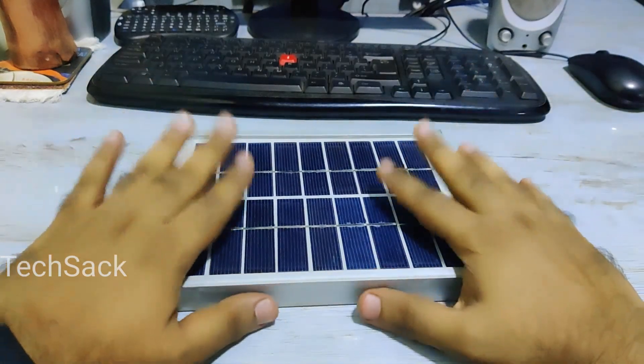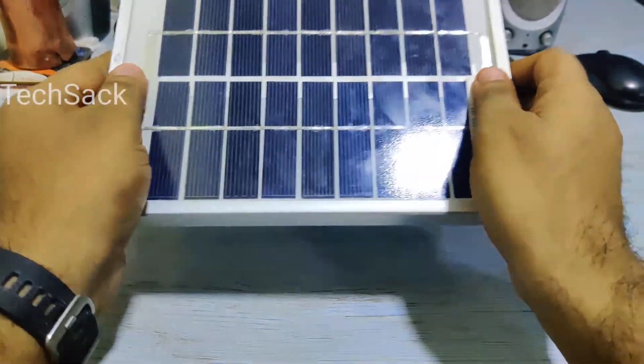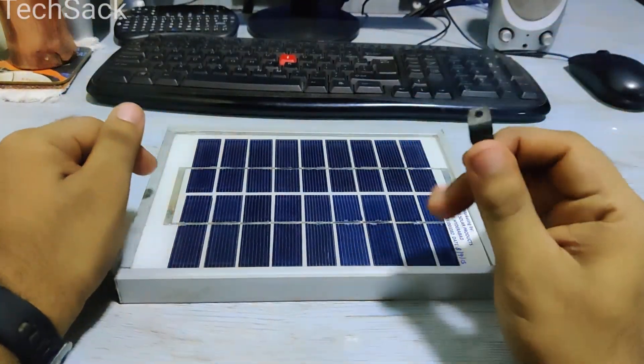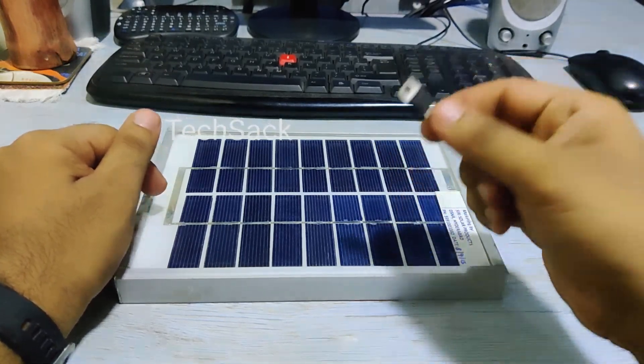Hi, today we will be building a solar power USB charger using only two electronic components: the solar cell and the voltage regulator IC 7805, which is a 5 volt DC voltage regulator.